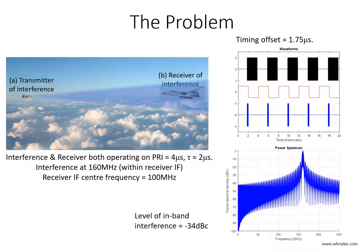The spectrum of the fragments of the interference pulses is shown bottom right. If the distance between the two radars is such that the transmitted pulses are offset from the receiver gating by 1.75 microseconds, then the resulting fragments of interference have widths of 0.25 microseconds. We see the spectrum centred at 160 MHz but spreading over a wide bandwidth on account of the narrowness of the fragments. The interference at 100 MHz is a mere 34 dBs down on its peak level and is accepted by the victim receiver.